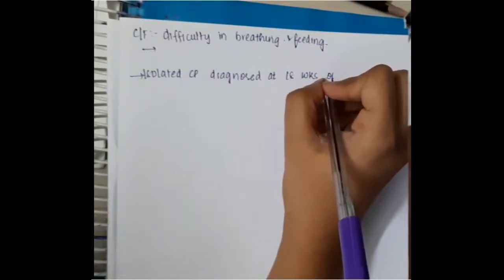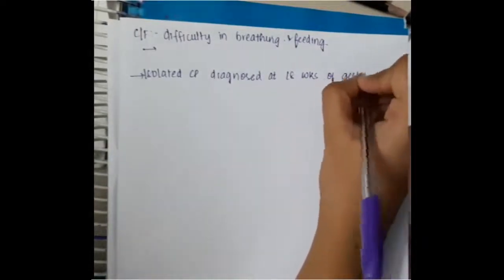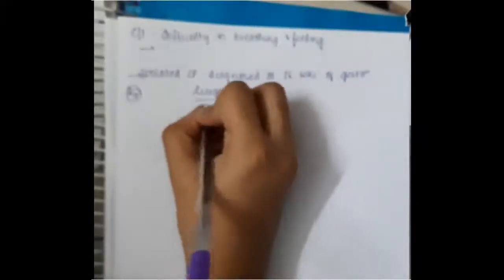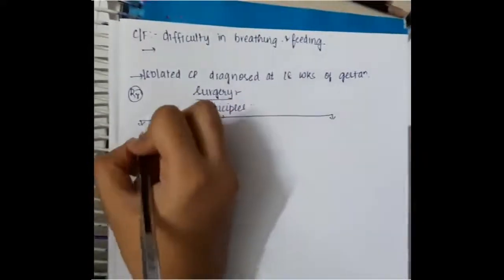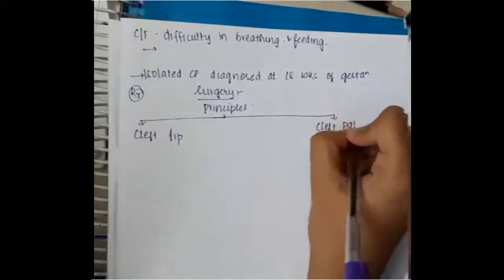One important thing here is the treatment. In the treatment, surgery is the treatment of choice and the principles of surgery include: first cleft lip surgery attaches and reattaches the muscles around the oral cavity. We will have to reattach all the muscles around the oral cavity.